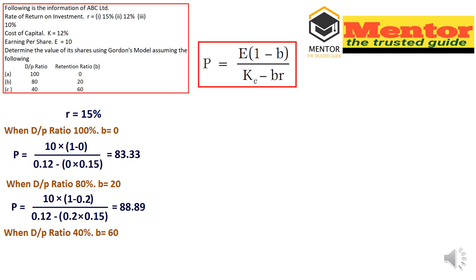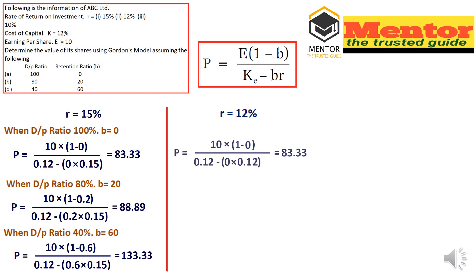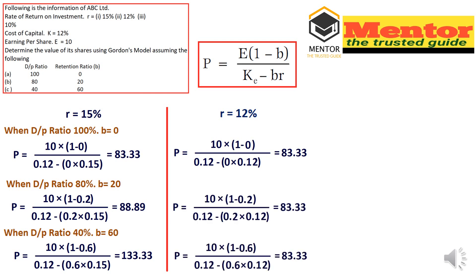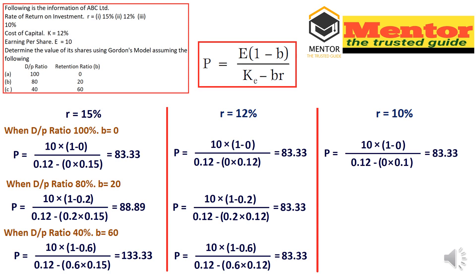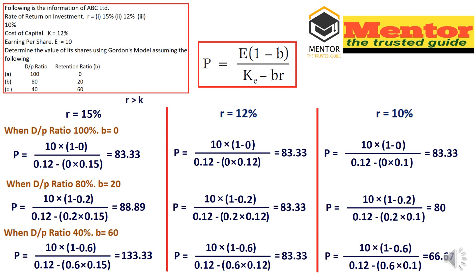Sub-case (c) of situation 1: payout is 40%, retention b = 60%. P = 133.33. For situation 2 where r = 12% (equal to ke), the value of the share is 83.33 in all three sub-cases — payout 100%, 80%, and 40% all give P = 83.33. For situation 3 where r = 10%, sub-case (a) payout 100% gives P = 83.33, sub-case (b) payout 80% gives P = 80, and sub-case (c) payout 40% gives P = 66.67.